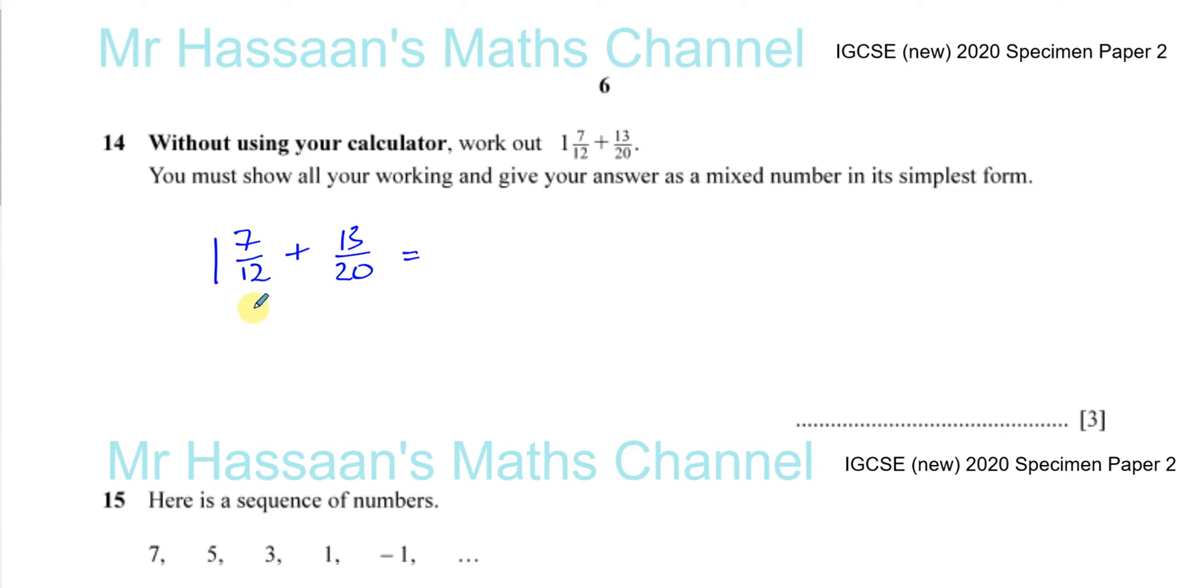So 1 and 7/12 is equivalent to 12/12 plus 7/12. You can think of it like multiply 12 by 1 and add 7. 12 times 1 is 12, plus 7 is 19, so 19/12. Because 1 is equivalent to 12/12, you have 12/12 plus 7/12 which is 19/12, and you have plus 13/20.